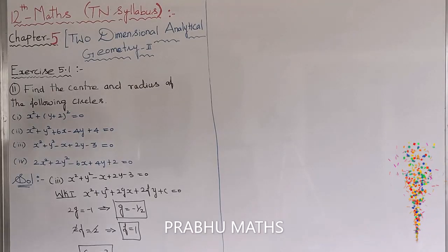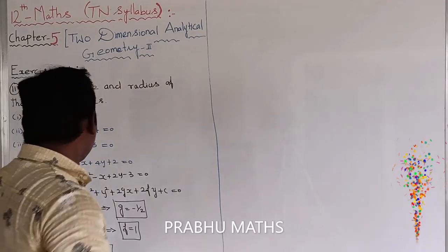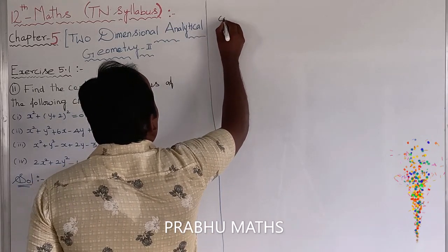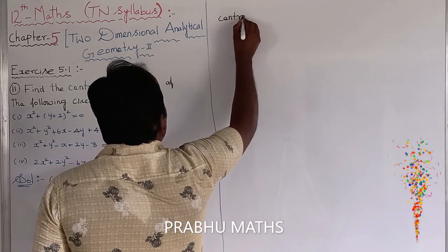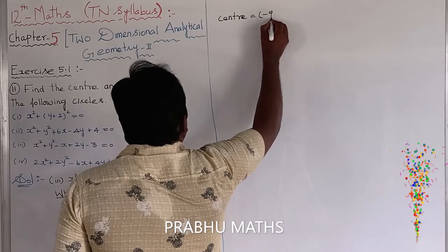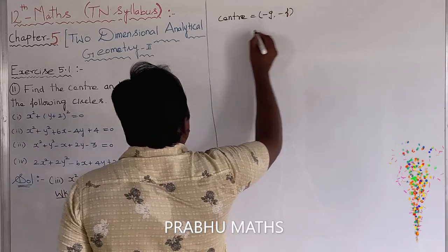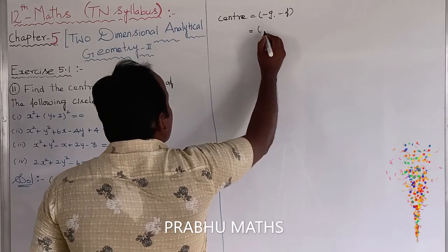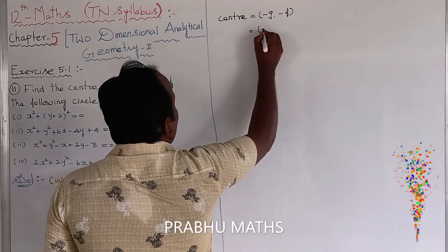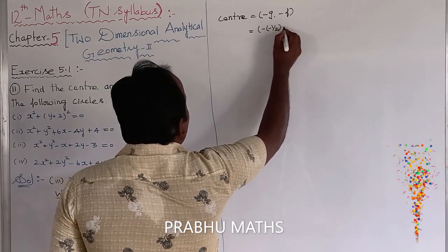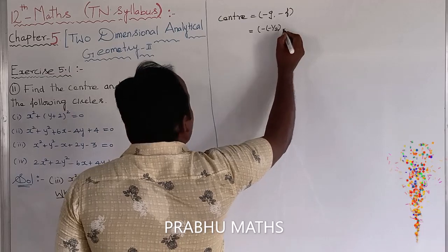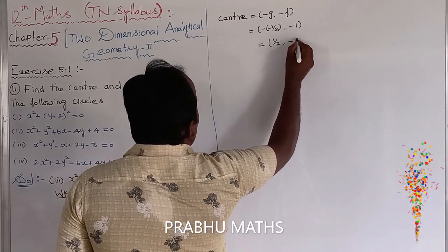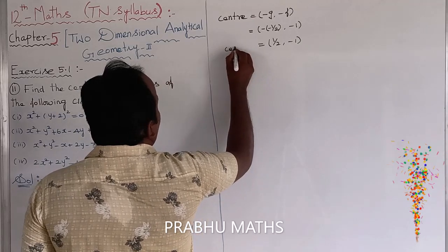So now, to find the centre value: centre is equal to minus g comma minus f. So it is equal to minus of minus 1 by 2, comma minus 1, which equals 1 by 2 comma minus 1. That is the centre.